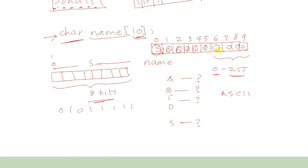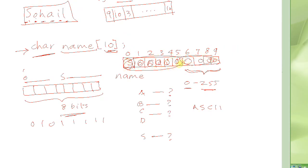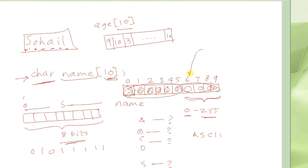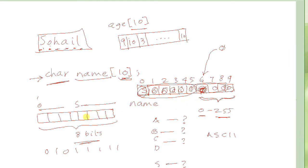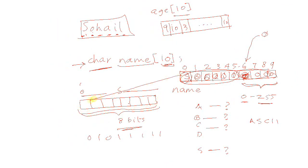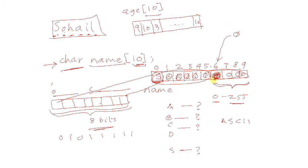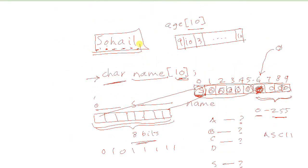Unless you initialize those slots, there is some garbage sitting there. How do we stop it from being considered part of the string "Suhail" that we wrote? What we have to do is write an end-of-string character, or null terminator, which is a 0. You end your string with a 0 in the next byte. Each character is one byte long. Even though my name has 6 characters, it needs 7 total characters to store.